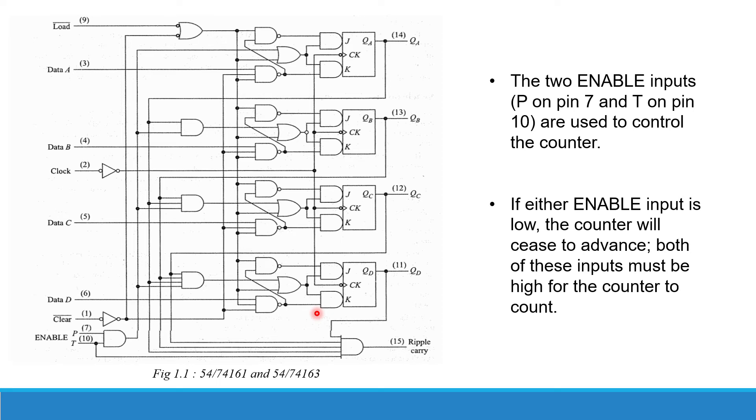Here is the figure as shown. If either enable input is low, the counter will cease to advance. Both of these inputs must be high for the counter to count.